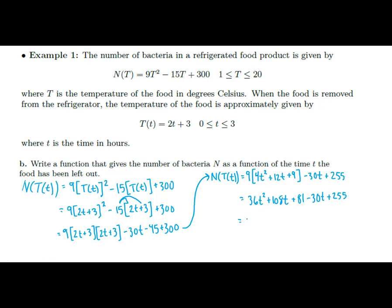All right, so 36t squared, I can combine my t terms, so subtract 30 from that, and I get 78t, and then 81 plus 255 gives me 336. So I now have a function for the number of bacteria directly as a function of time. So you give me any time now, and I can plug that in directly to this equation, and you can check our work from the last problem.